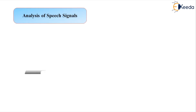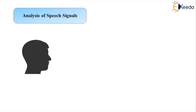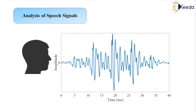Let us see a typical speech signal and how it looks. This is a person talking, and you see such a signal here. The plot has amplitude on the vertical axis and time on the horizontal axis, measured in milliseconds. You can see markings from 0, 5, 10, 15, and so on up to 40.